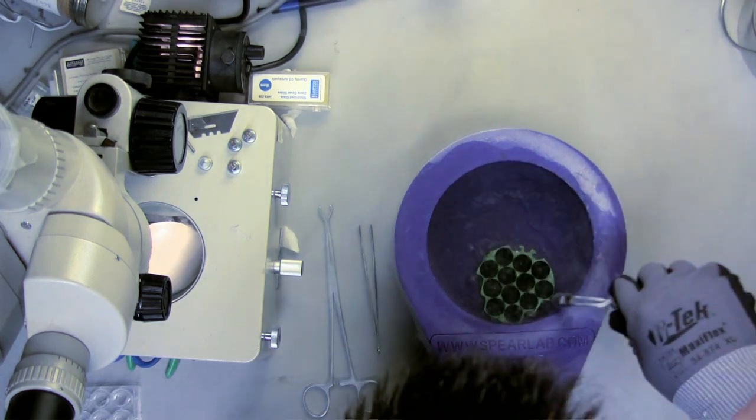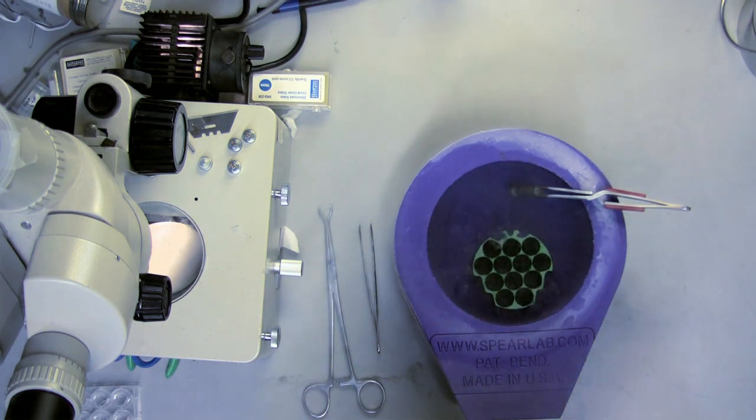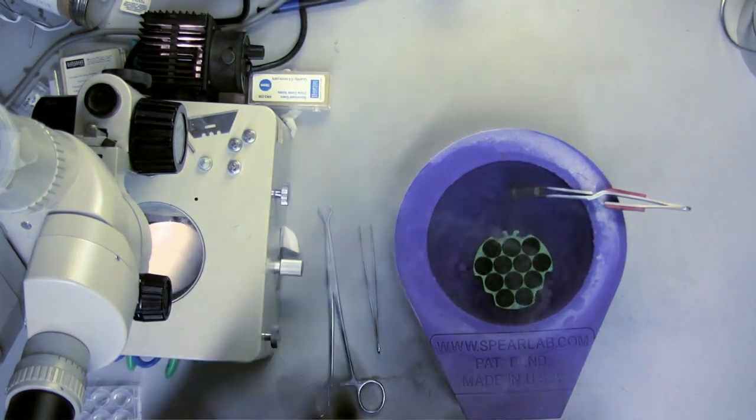This first method shows the use of Rigaku cryotongs to load samples into the pucks. Always ensure that the puck and tongs have been chilled down before use.